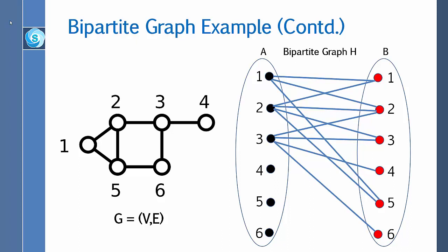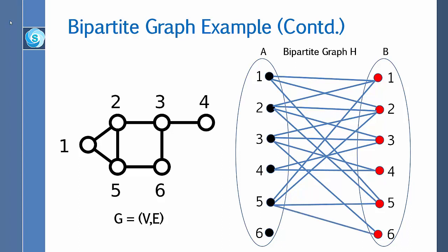Vertex four is adjacent to three and four. Vertex five is adjacent to one, two, five, and six. Vertex six is adjacent to vertex three, vertex five, and vertex six. This is how we construct the bipartite graph H.